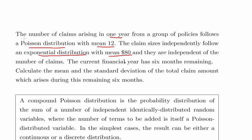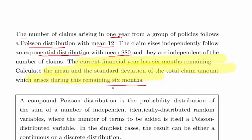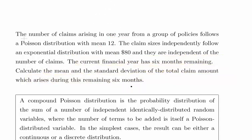The claim sizes independently follow an exponential distribution with mean $80, and they are independent of the number of claims. Now, the current financial year has six months remaining — calculate the mean and the standard deviation of the total claim amount for the remaining six months. It seems like a straightforward question using standard formulas.